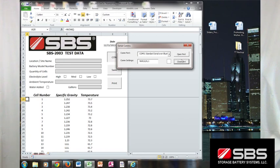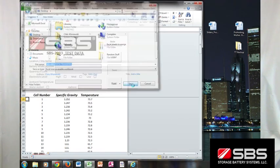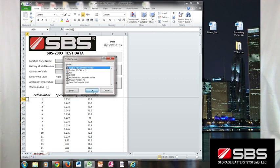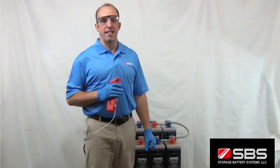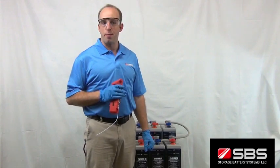Simply close the COM port on the data transfer template, and you can save or print a report right from the screen. Now that you know how easy it is to use the SBS 2003 digital hydrometer, let's do a comparison test.